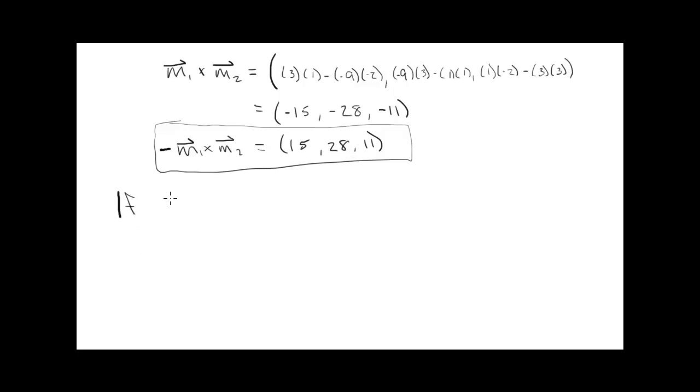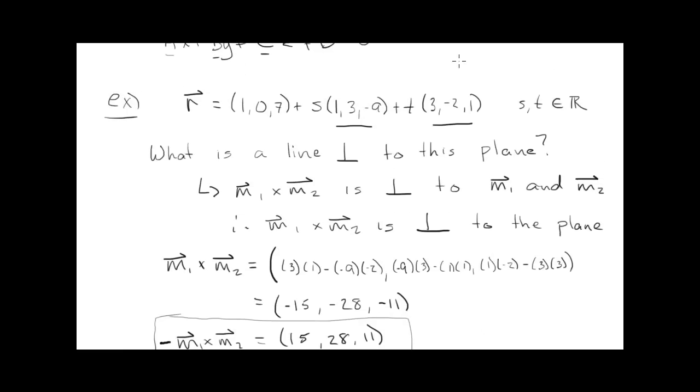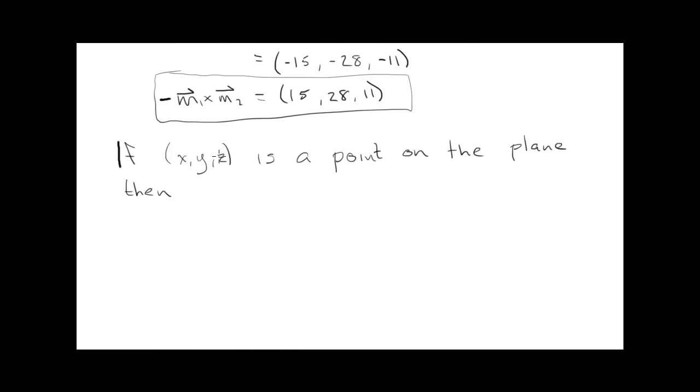So let's say if (x, y, z) is a point on the plane. So that's a general point on the plane. Then let's try to get a direction vector. And I know we already know two direction vectors. But we're going to try to get another direction vector. And remember here that (1, 0, 7) is a point on the plane. So (x, y, z) is a point on the plane, but also (1, 0, 7) is a point on the plane. So the vector connecting these two points, so it would be (x-1, y-0, z-7), is a general direction vector.